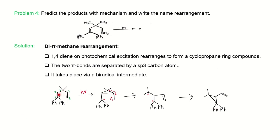We have seen the two pi bonds separated by sp3 carbon and the biradical intermediate — this is the di-pi-methane rearrangement reaction. I hope you will now be able to solve similar questions on photochemistry. If you have any doubts in photochemistry, pericyclic reactions, or other topics of organic or analytical chemistry, write in the comment section. I will share the link to my photochemistry video in the description. If you find these videos helpful, please subscribe, like, and share with your friends. Till then, happy learning, bye!